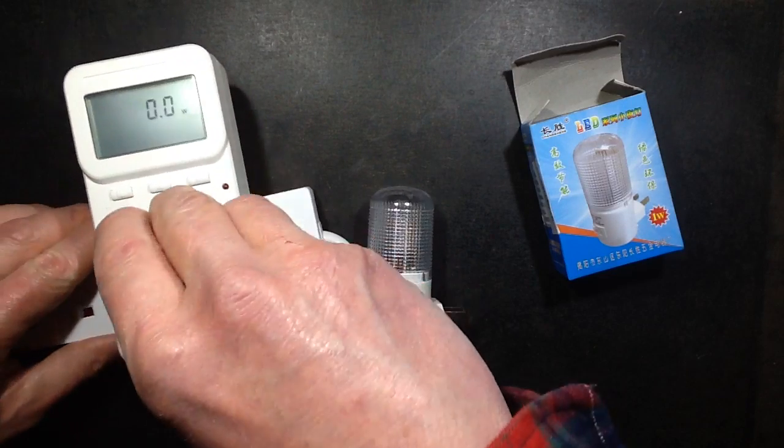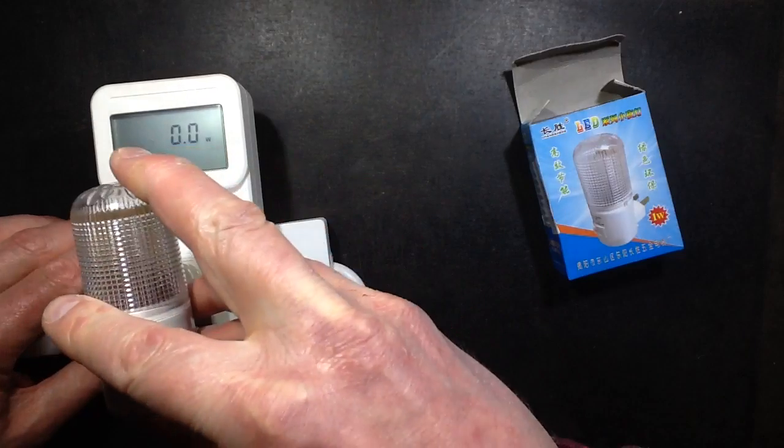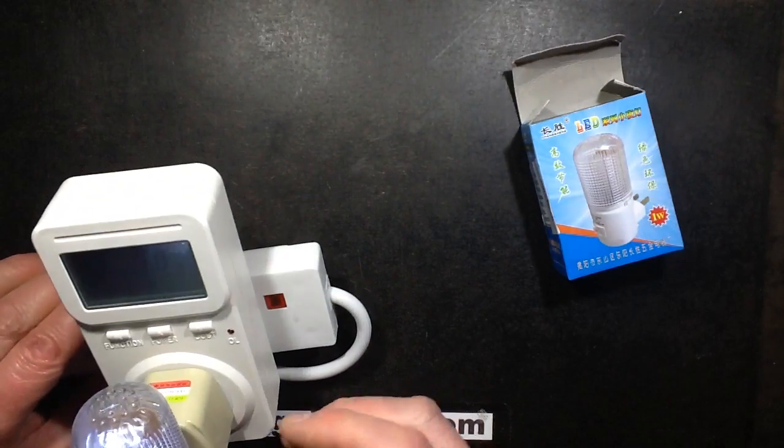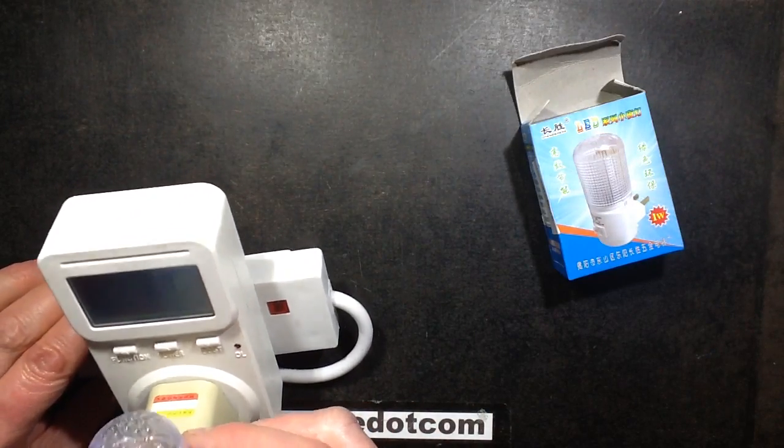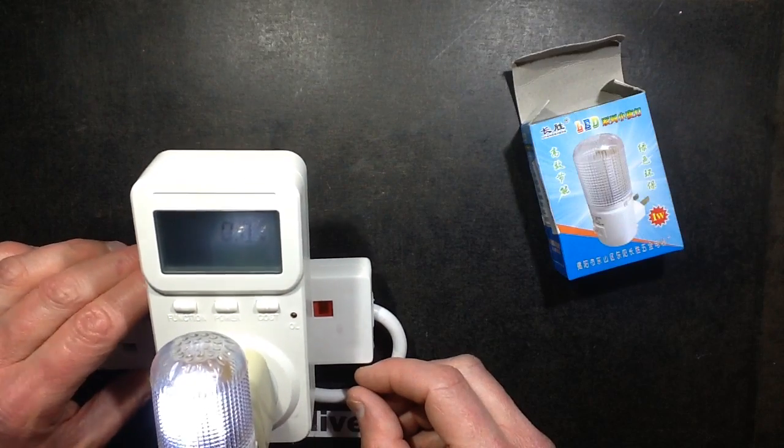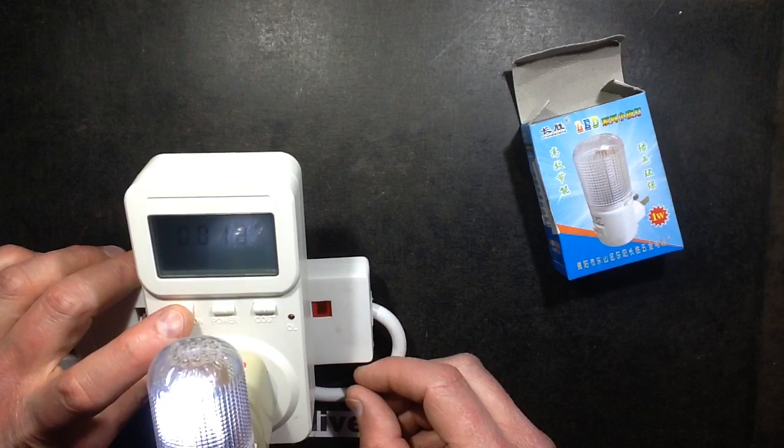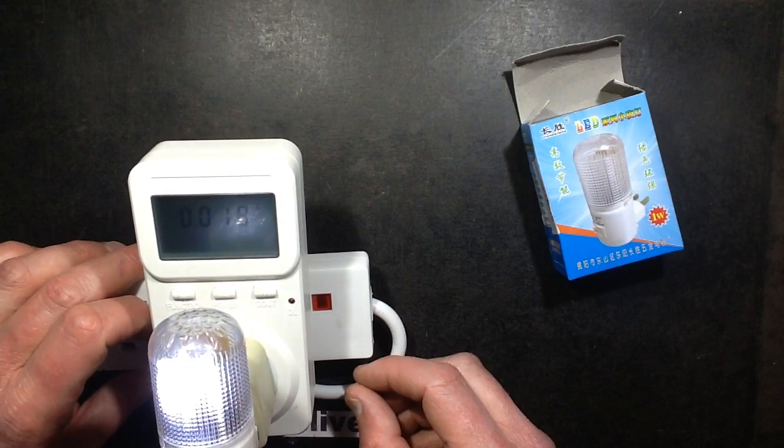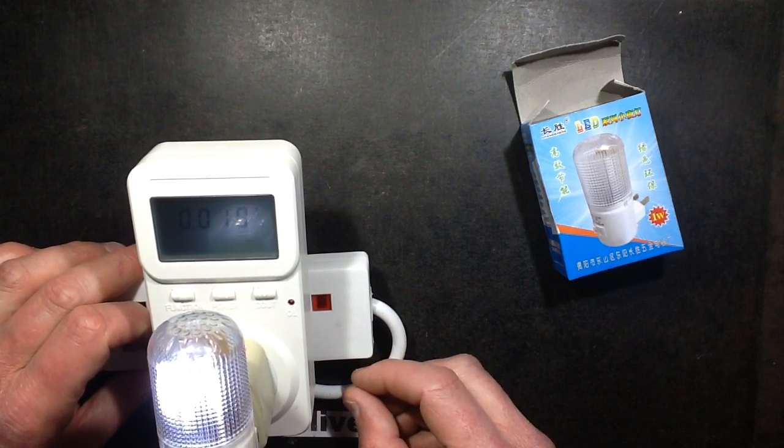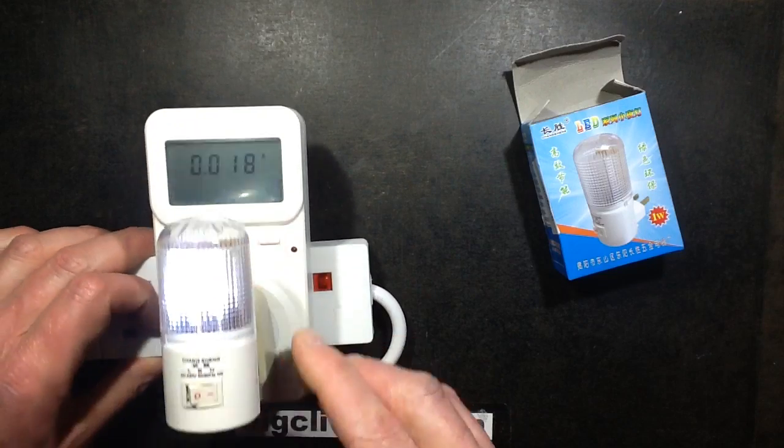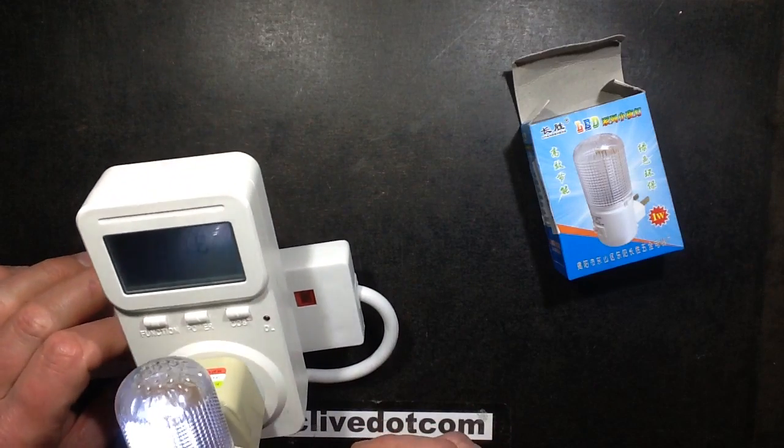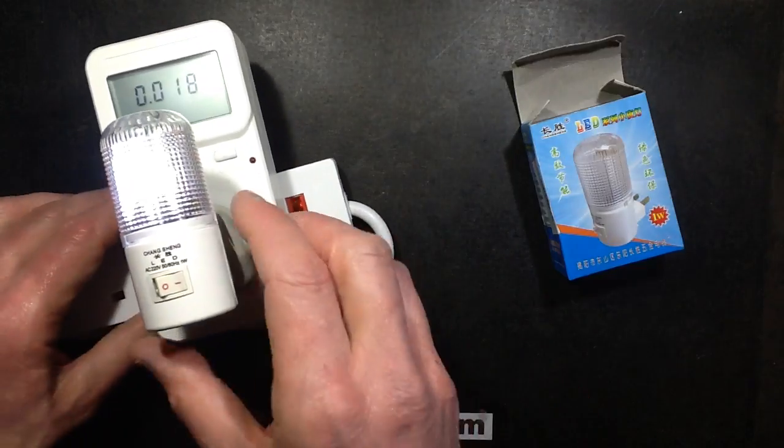So let's find an adapter, plug it in. Bright enough cold white, doesn't register on wattage at all. Shows 18mA. Okay, the 18mA is a reactive current. It's obviously got a capacitive dropper in it, which you'd kind of expect.